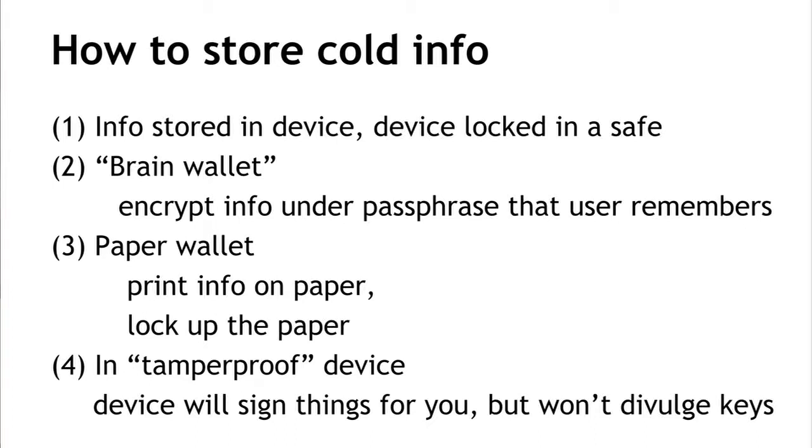The second method is called a brain wallet. We take the information we want to protect and encrypt it under some passphrase or password that the user remembers. To get the information back later, we ask the user to give the passphrase and then decrypt. If the crypto is done correctly and the user picked a good passphrase, the security will be as good as the security of the passphrase — as long as the adversary can't guess or coerce the passphrase out of the user.